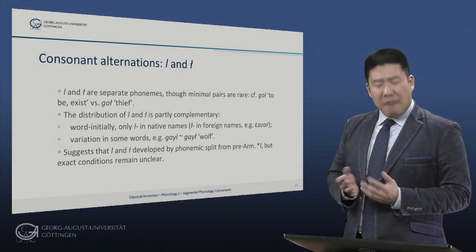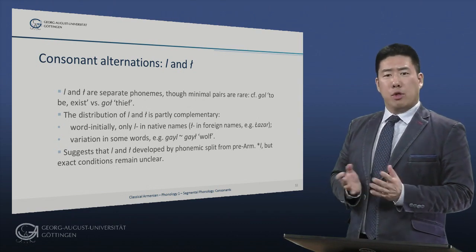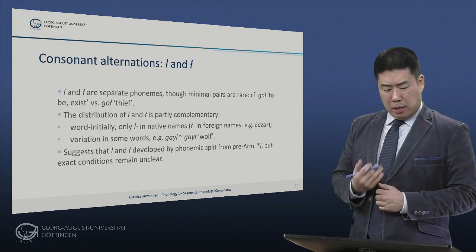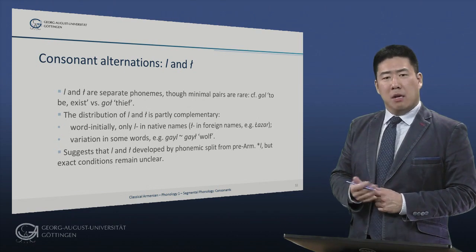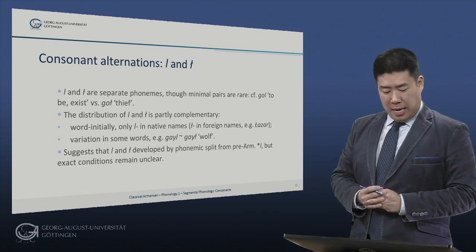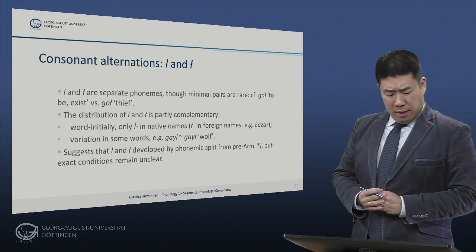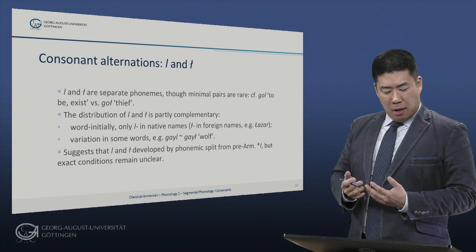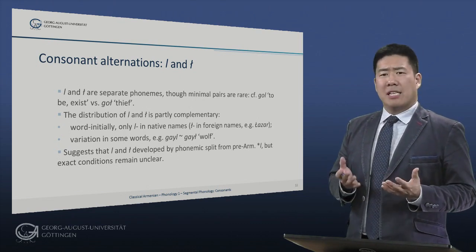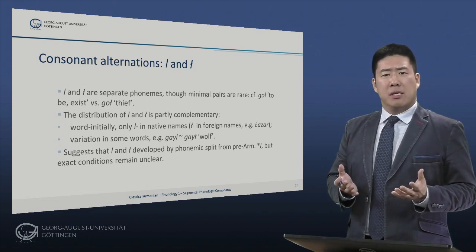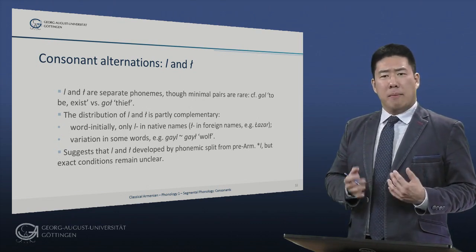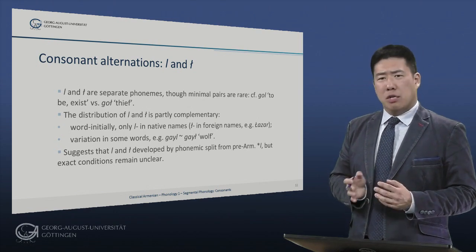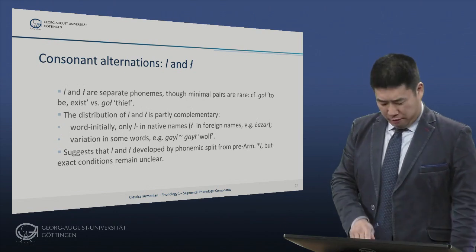And we have variation in some words. For example, the word for wolf is usually spelled 'gail', but also occurs in manuscripts as 'gail'. These facts suggest that L and velarized-L developed by some kind of phonemic split from pre-Armenian, but the exact conditions are still not yet clarified.